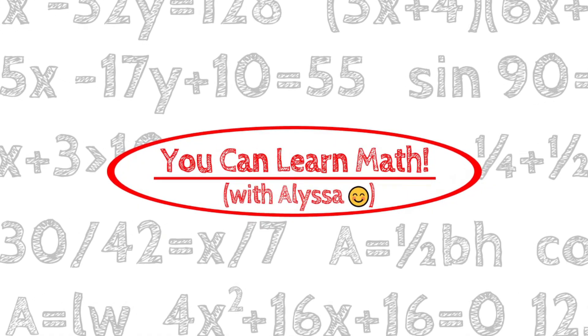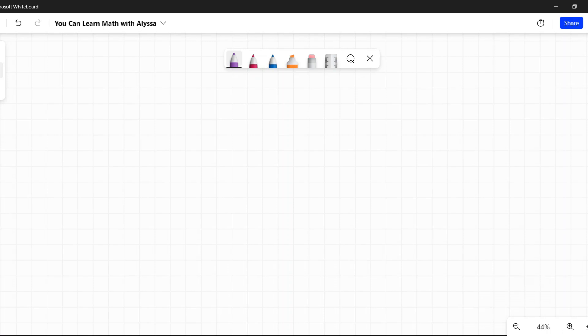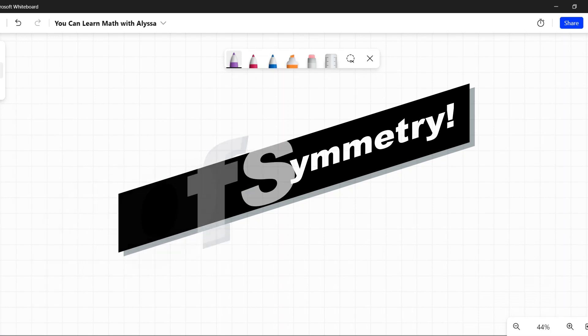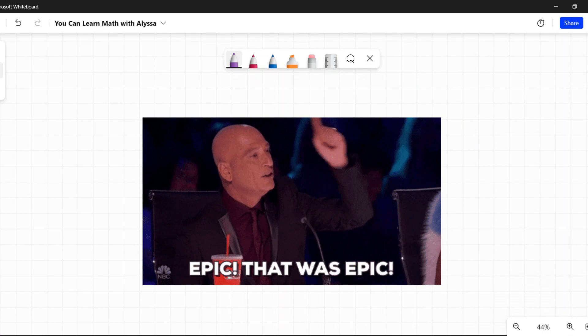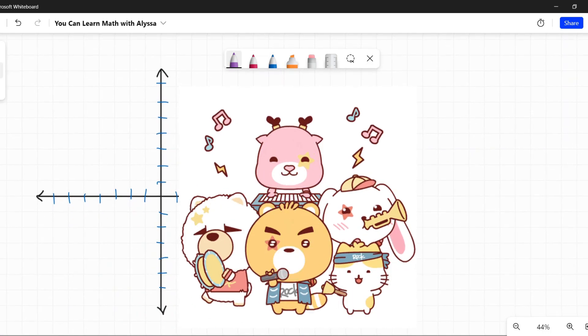Hi everyone, it's Alyssa and welcome to You Can Learn Math. So today we're talking about the axis of symmetry. Now when we say axis of symmetry, it has sort of an epic name to it, like you'd expect some rock band named axis of symmetry.